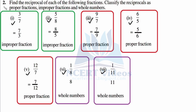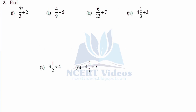Question 3: Find the answer. First: 7/3 divided by 2. Second: 4/9 divided by 5. Third: 6/13 divided by 7. Fourth: 1 and 1/3 divided by 3. Fifth: 3 and a half divided by 4. The last one is 4 and 3/7 divided by 7.